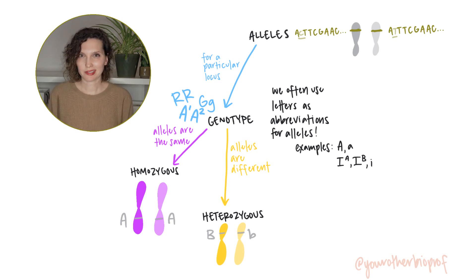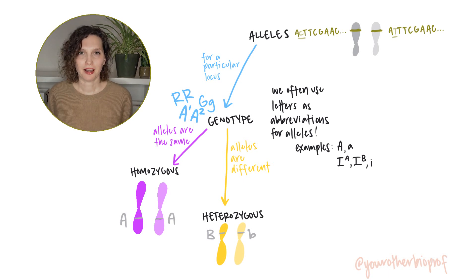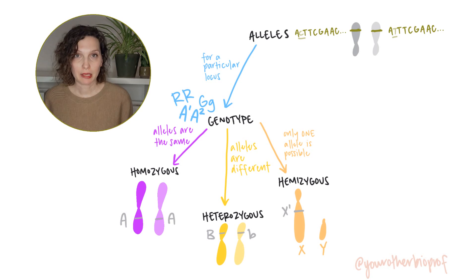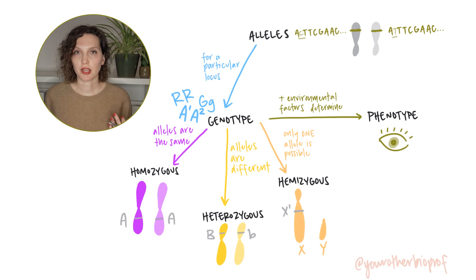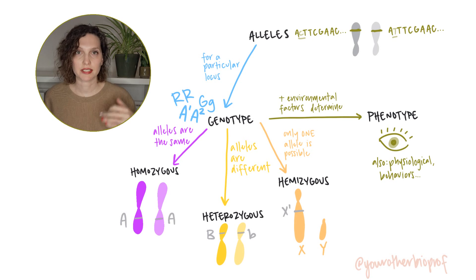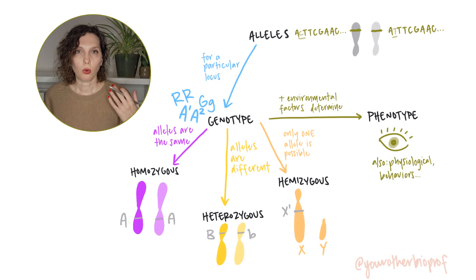What if you can't have two alleles? An individual who is XY, for example, can only have one copy of the alleles on the X chromosome — we would describe this as hemizygous. The phenotype is how we observe an individual's traits as determined by their genetic makeup — the genotype — as well as environmental impacts. When you see phenotype, think 'ph' for physical characteristics. These can include obvious things like eye color, or more difficult to observe traits like metabolic rate.